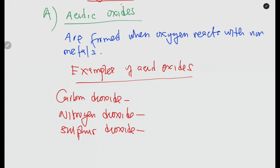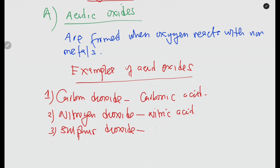As you study, don't just limit yourself to these examples. Acidic oxides are called acidic because they dissolve in water to form acid. For example, carbon dioxide dissolves in water to form carbonic acid, which is a weak acid and the component of many carbonated drinks. Nitrogen dioxide forms nitric acid, and sulfur dioxide dissolves in water to form sulfuric acid.